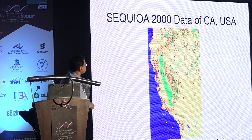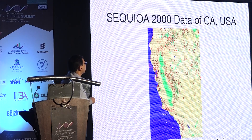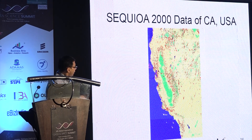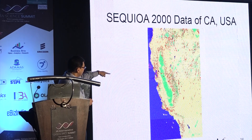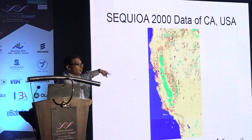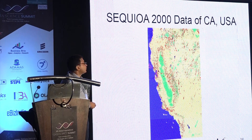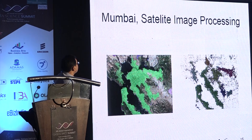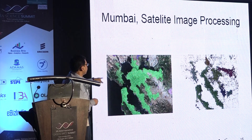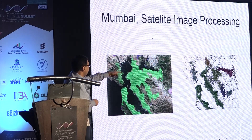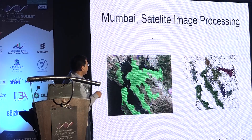Here is another example — this is forest data from California, an open-source database. You can make out the different zones, and these zones are mostly non-convex kind of groupings, which is only possible with DB Scan kind of density-based methods. This is a satellite image of Mumbai — it was fed as input to the clustering algorithm and the output is pretty accurate, with the clusters identified correctly.